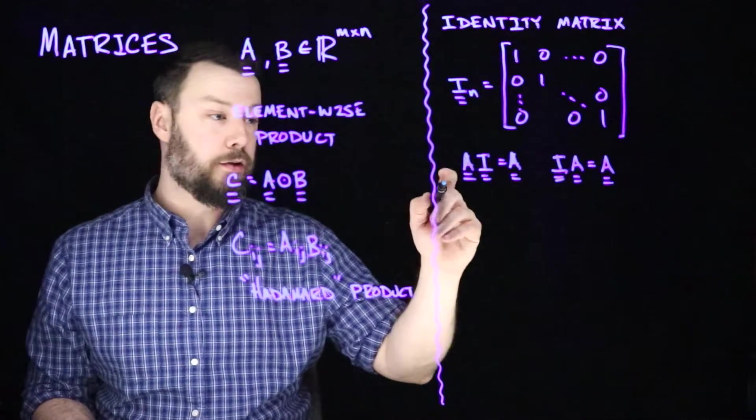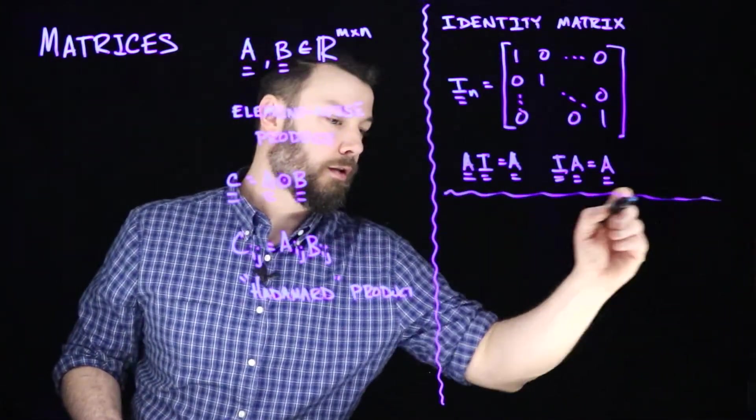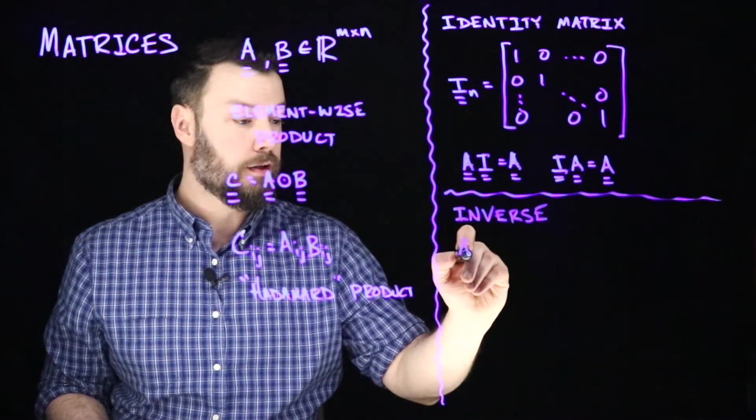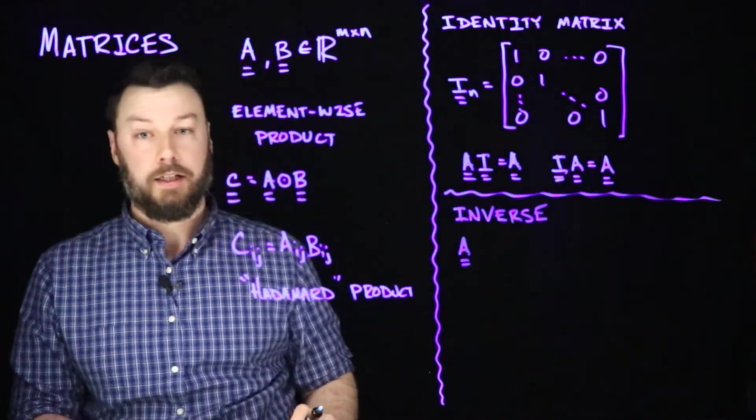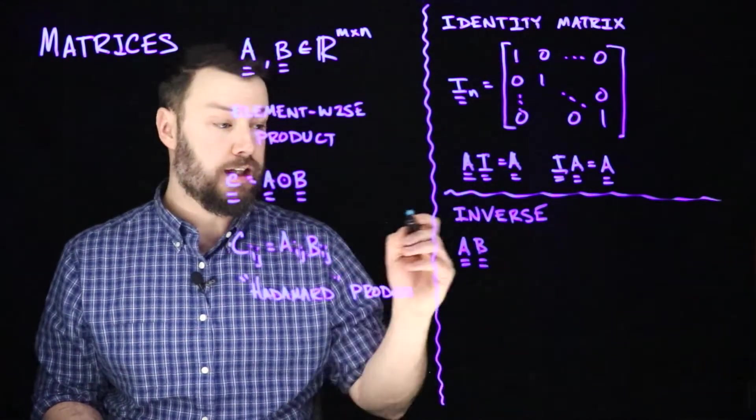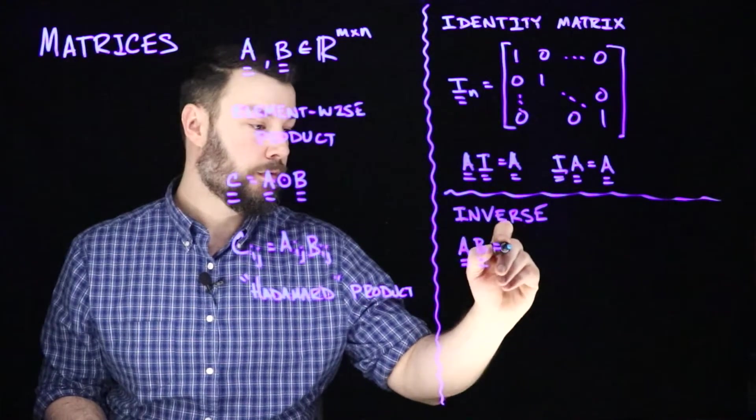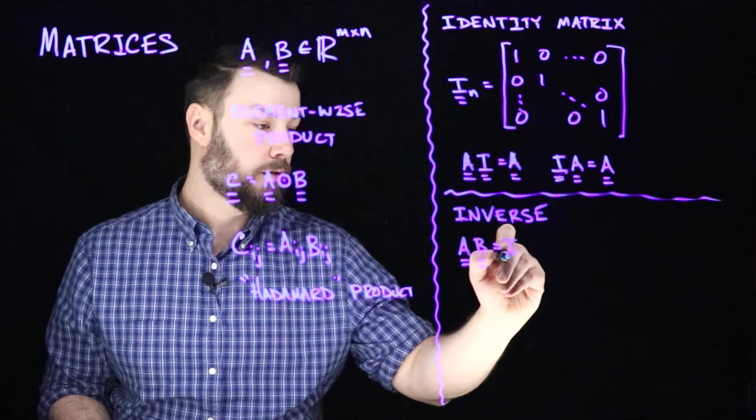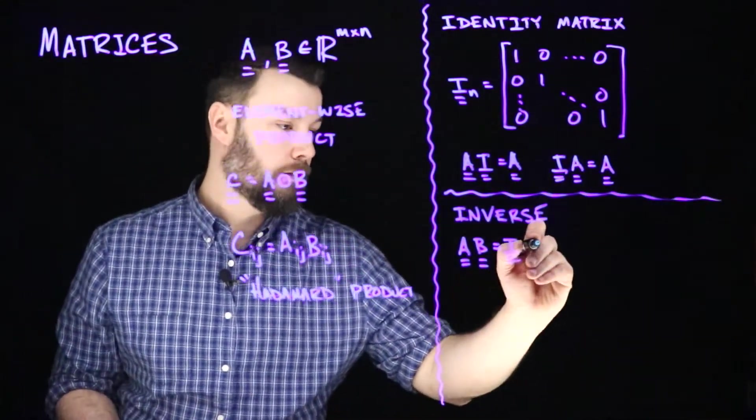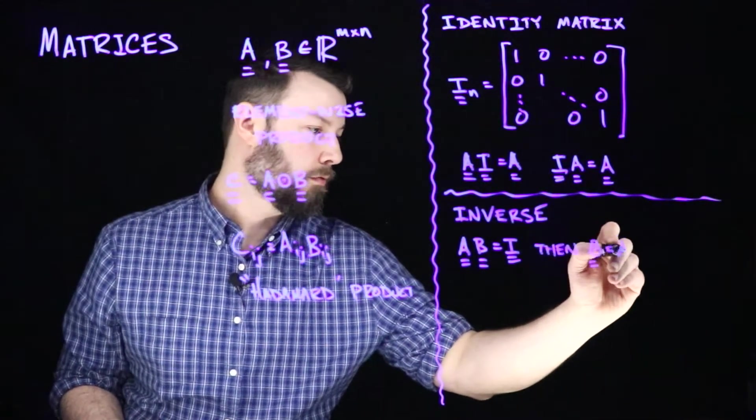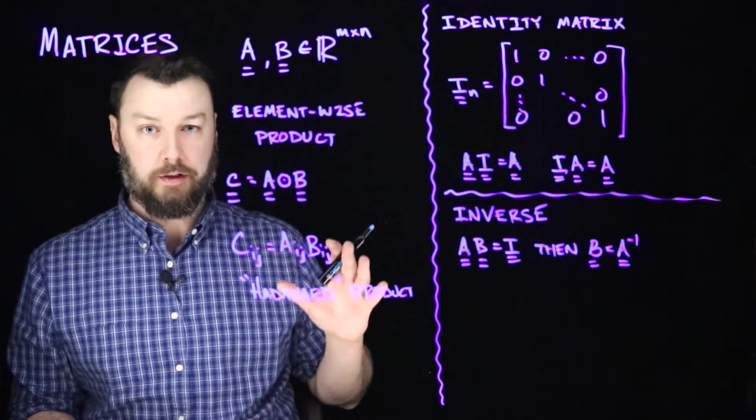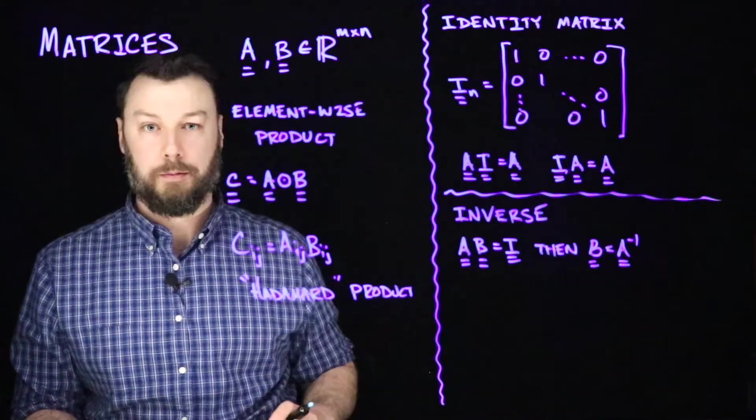So this is the key thing that we need in order to be able to talk about matrix inversion. If I have a matrix A that is square, if there is a matrix B such that A multiplied by B equals I, that is equal to the identity, then B is the inverse of A. And we usually write that as raised to the power of negative one. Let me emphasize that the inverse does not necessarily exist, but if it does exist, it is unique.